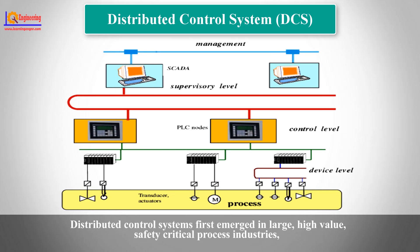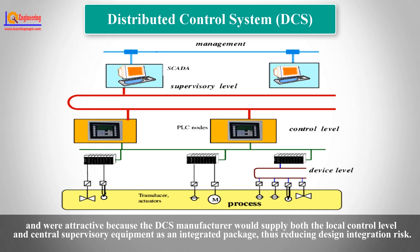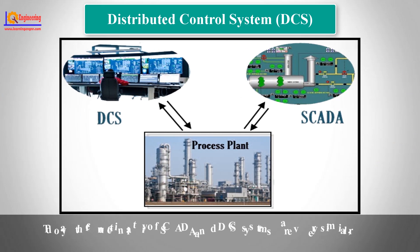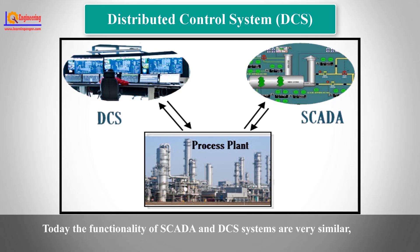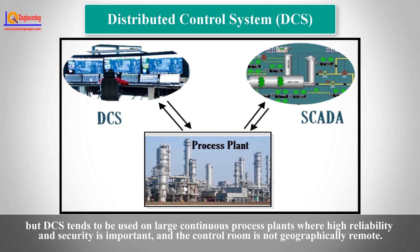Distributed control systems first emerged in large, high-value, safety-critical process industries, and were attractive because the DCS manufacturer would supply both the local control level and central supervisory equipment as an integrated package, thus reducing design integration risk. Today, the functionality of SCADA and DCS systems are very similar, but DCS tends to be used on large, continuous process plants where high reliability and security is important, and the control room is not geographically remote.